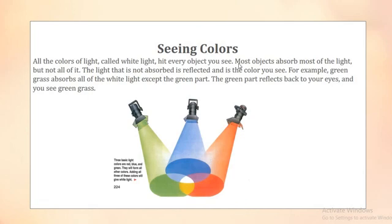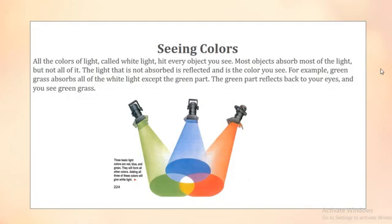Every object you see - most objects absorb most of the light but not all of it. The light that is not absorbed is reflected, and that is the color you can see. For example, green grass absorbs all the white light except the green part. The green part reflects back to your eyes, and you can see green grass.